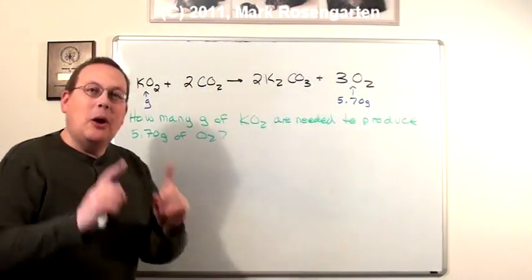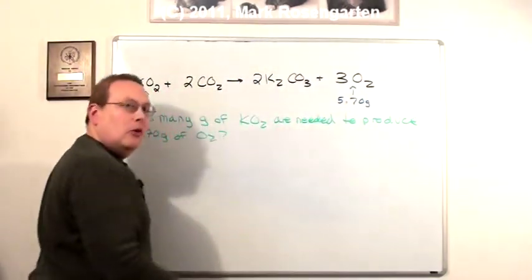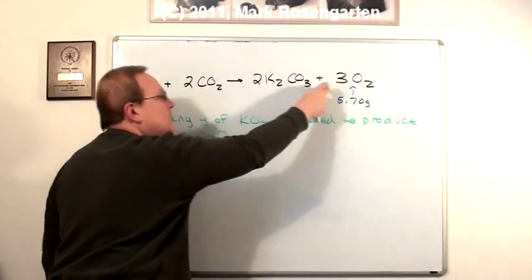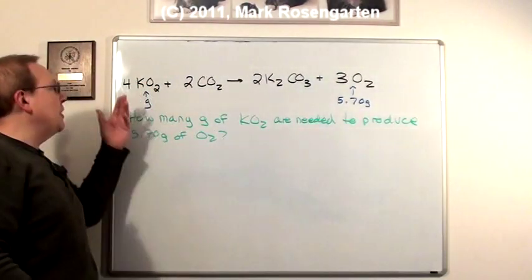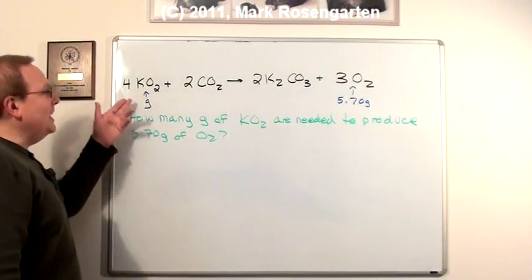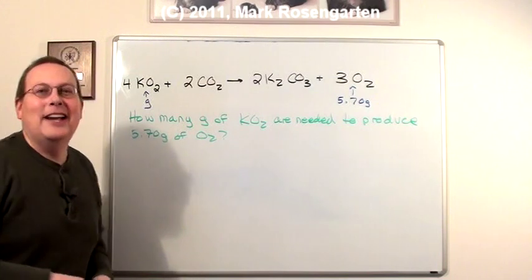It's a mole ratio. So our first job is to convert grams into moles. Then we use this ratio between these two substances to figure out how many moles of potassium superoxide we're going to need. And then we can easily convert that into grams using gram formula mass. Let's try it.